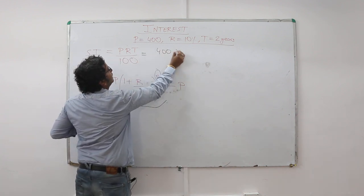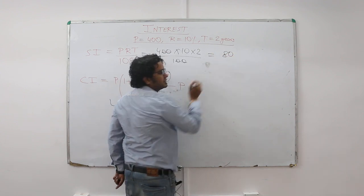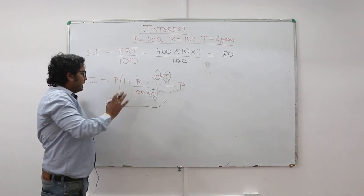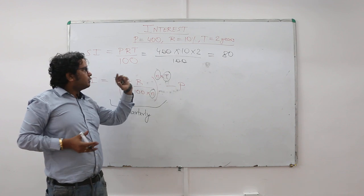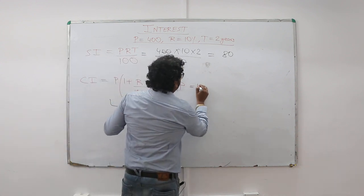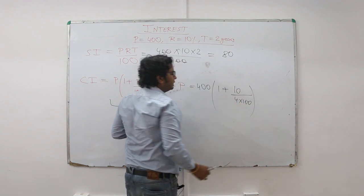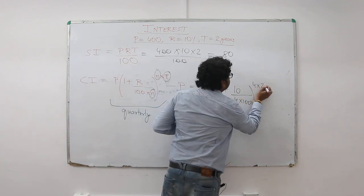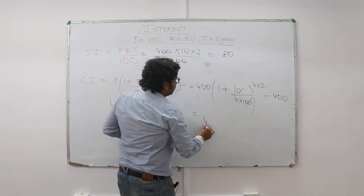Now coming to this one, if I say that the calculation was done quarterly, let's assume in the question the compounding is done quarterly. So now let's put values. This will be 400 into (1 plus R by 4 into 100) to the power 4 into T was two years, 4 into 2, and minus 400. So now understand, this gets cancelled, what you get is 400 into 41 by 40 to the power 8 minus 400.